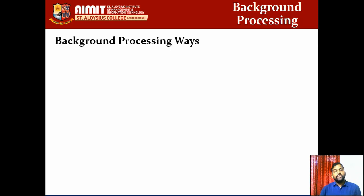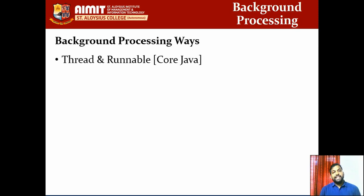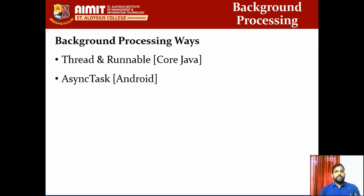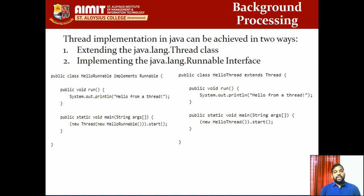For background processing, there are multiple ways. You already know two from core Java: Thread and Runnable. Both belong to core Java and you can use them in Android because Android Java is a subset of Java SE. Specifically for Android, there is a more sophisticated method called AsyncTask, which we'll use in the next video. Thread implementation in core Java can be done in two ways: extending the Thread class, or implementing the Runnable interface.